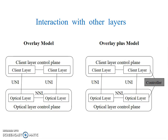Interaction with the other layers: there are two layer models described — the overlay model and the overlay plus model. There must be connection and interaction between the client layer control plane and the optical layer control plane. In the overlay plus model, there is an additional controller that controls the signaling between the client layer control plane and the optical layer control plane.